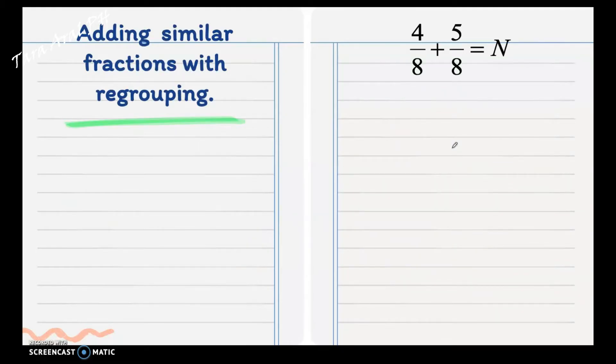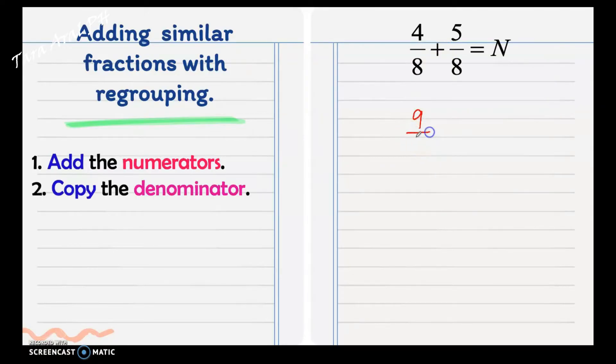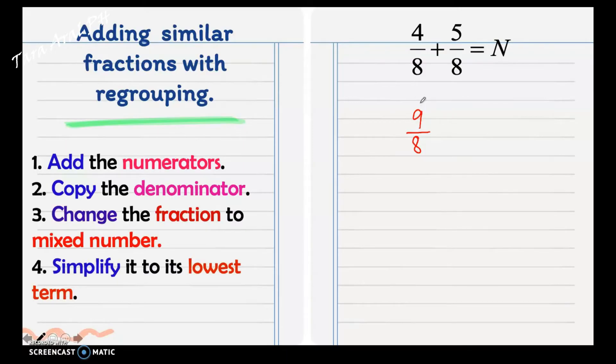Adding similar fractions with regrouping. Regrouping is rearranging groups in place value to carry out an operation. The steps are: first, you add the numerators. We have 4 plus 5 is 9. And, copy the denominator, which is 8. Now, as you can see, this is called an improper fraction. It is a fraction where the numerator is equal to or greater than the denominator.